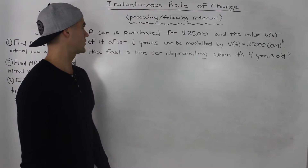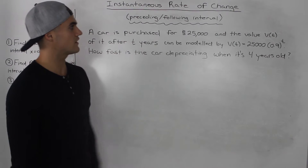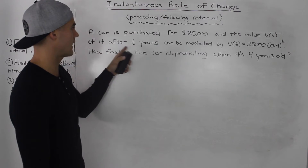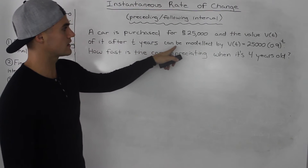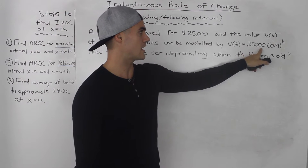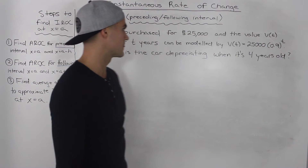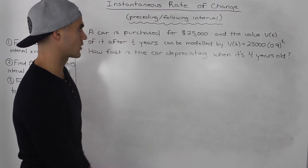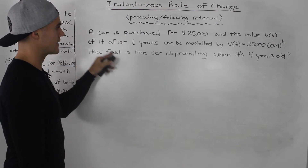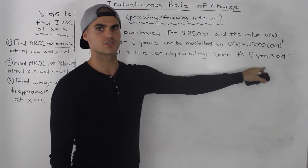So let's work with this example here. A car is purchased for $25,000 and the value V(T) of it after T years can be modeled by V(T) = 25,000 times 0.9 to the power of T. So we're working with an exponential function. How fast is the car depreciating when it's four years old?